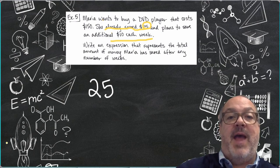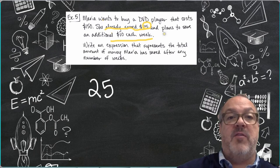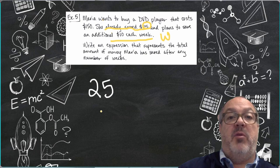And then I'm going to add on to this whatever she saves per week. And I'm going to define my variable w as the number of weeks.